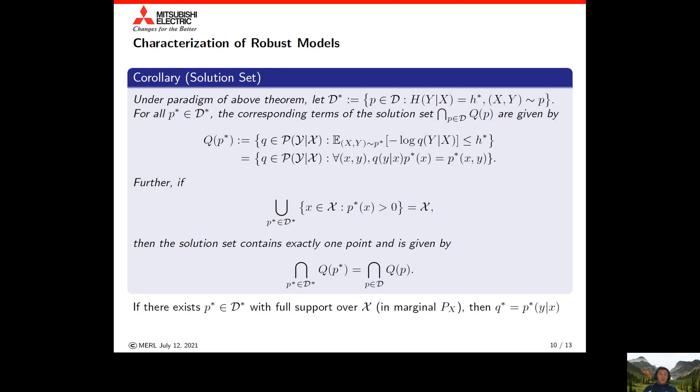This simply says that where P star has support, the corresponding decision rule is defined over the support for variable X with respect to P star. Hence, if over all joint distributions in D star, the support covers the space of X, then the solution set contains exactly one point defined as the decision rule consistent with the posteriors of all P stars in D star. Further, if there is just one P star in D star with full support, then the optimal decision rule is simply the posterior of the label given X for that P star.